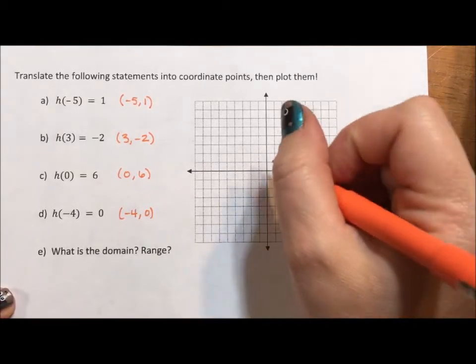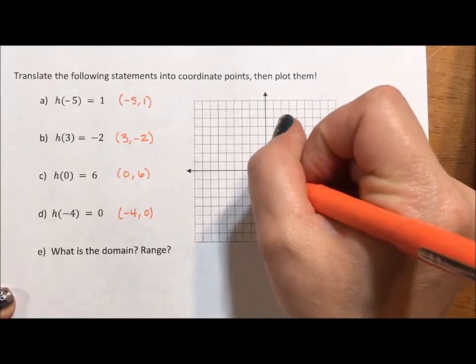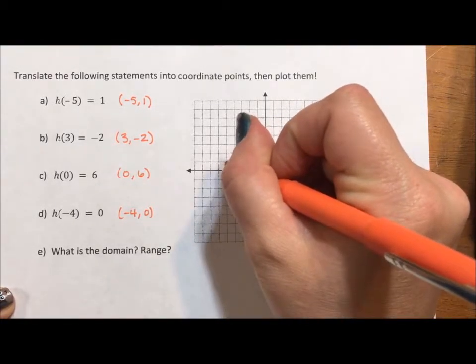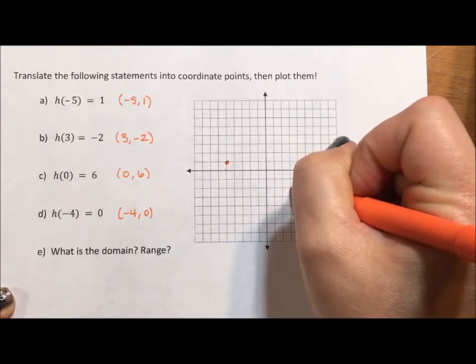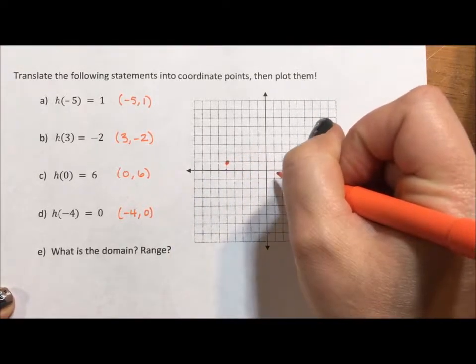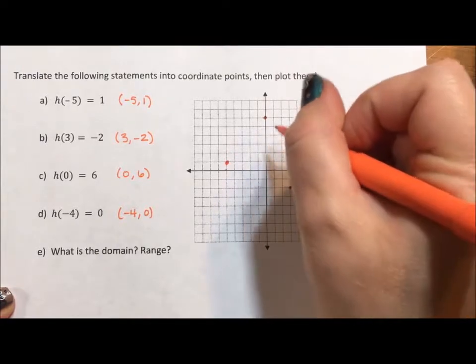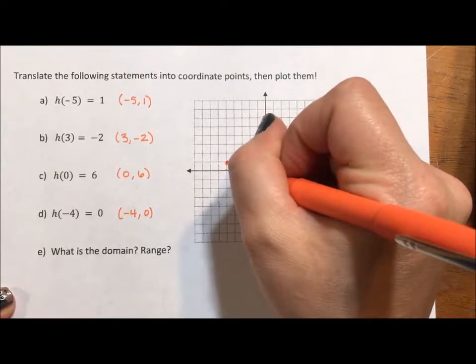So if I were to plot these, I would plot negative 5, 1, 2, 3, 4, 5, 1. Then 3, negative 2. Then 0, 6. And negative 4, 0.